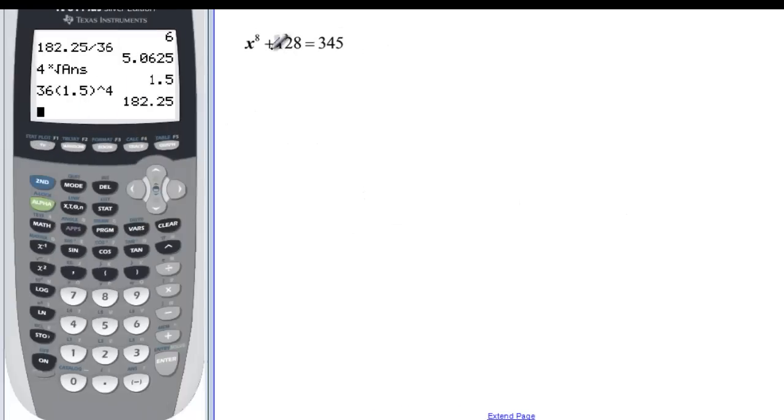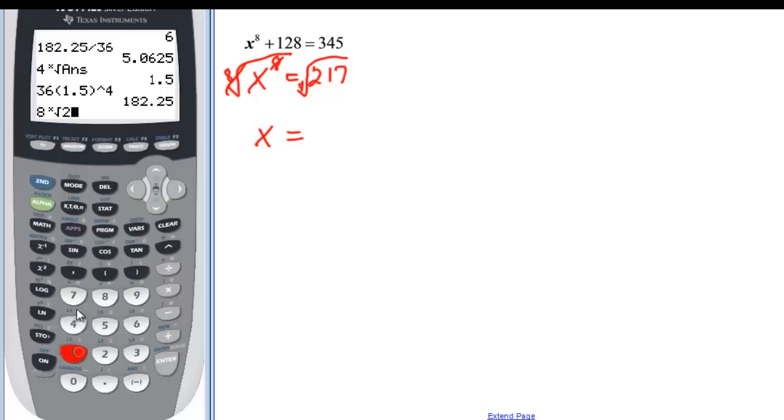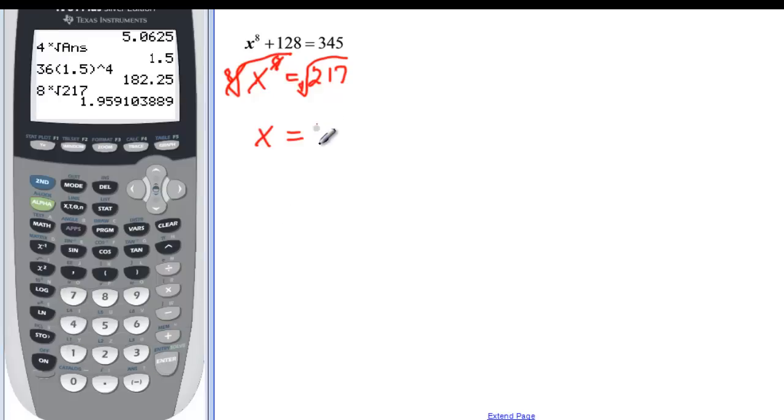There's two more problems. So I need to subtract the 128. And when I subtract 128 from 345, I'm going to get 217. So x to the 8 is equal to 217. And I'm going to take the 8th root again. And 8 and the 8th root cancel each other out since they're opposites. So I have x and then 8, math, option 5, 217. And I have 1.959. So we'll call it 1.96.